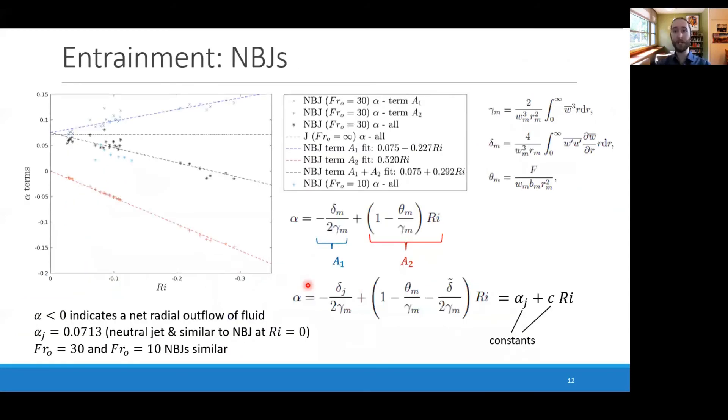We then proceed to calculate entrainment for these non-zero terms in a negatively buoyant jet with a source Froude number of 30. The first term is shown by the dark blue markers up here, which is shown to increase with negative Richardson number. This is related to the increasing normalized Reynolds stresses that we saw in a previous slide. The red markers reflect the second term and is almost linear, and this is because the terms in the bracket are almost constant compared to the changing Richardson number. The result is an approximately linear line.